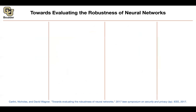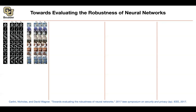So in this literature, there is going back and forth between attacking networks and coming up with defenses against those attacks. This paper is also about a new way of attacking our networks and a new way of looking at how to attack and come up with adversarial examples.